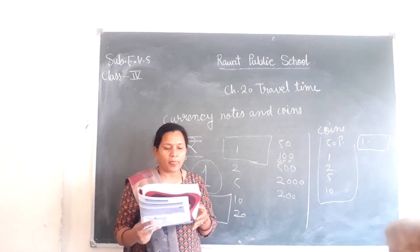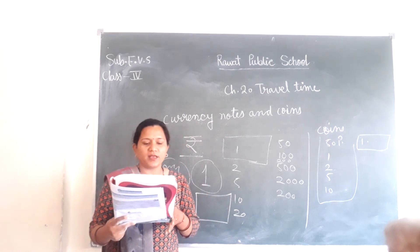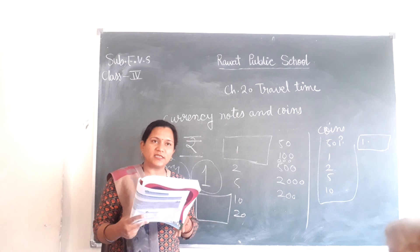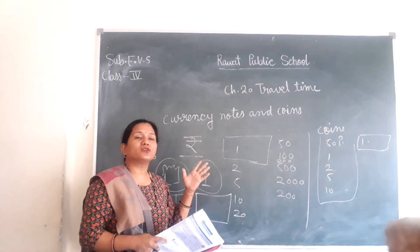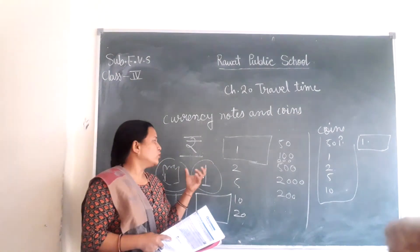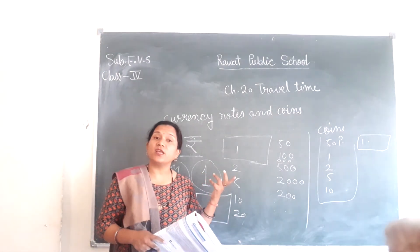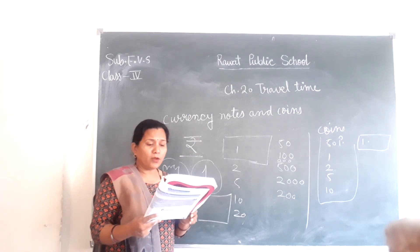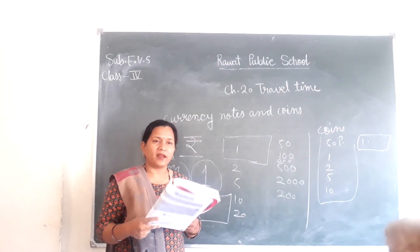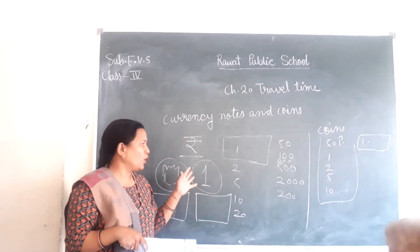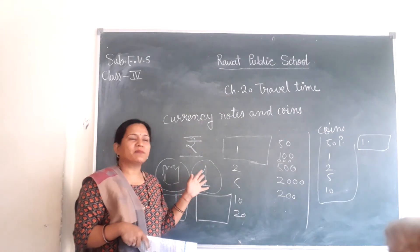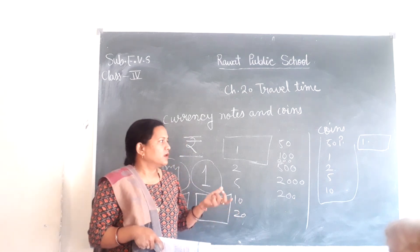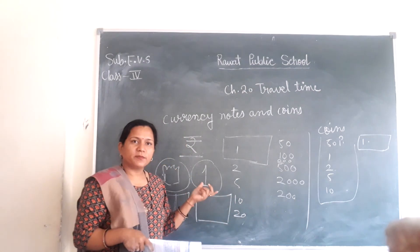In the age of kings and queens, coins were made of gold and silver. Today, coins are made up of mixed metals instead of gold and silver.